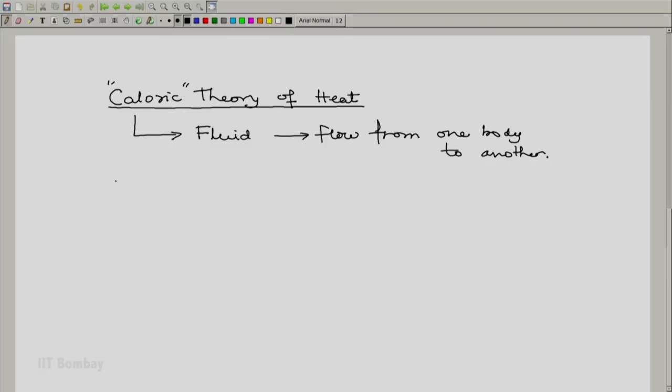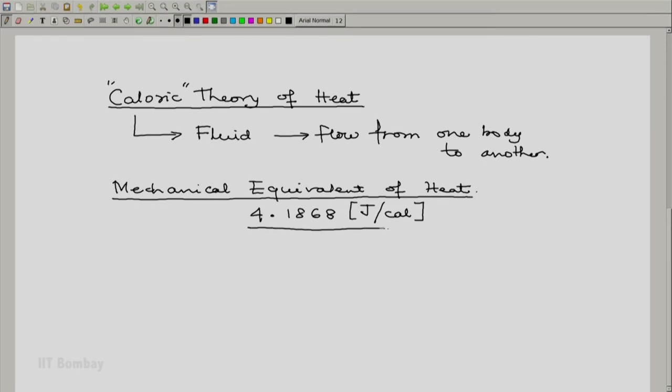Quantification of this led to what was called the mechanical equivalent of heat, which we today know, in a school biology is defined today as 4.1868 joule per calorie. Today we know it only as a conversion factor. But in the earlier days, this was known as the mechanical equivalent of heat. And this number was something like a magic number.